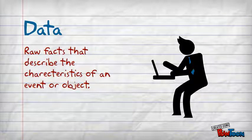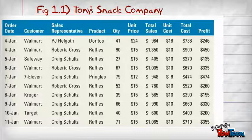Let's take a look at an example. If you look at figure 1.1, we have the example of Tony's Snack Company. It's really hard to find anything in this that can really help us with the business. That's because raw data has no context. It's just a recording of transactions, a recording of the facts.